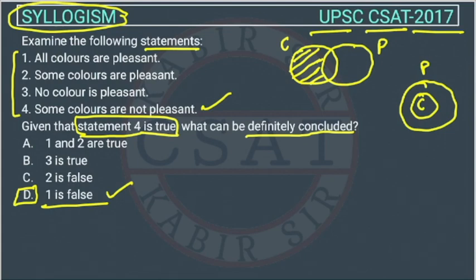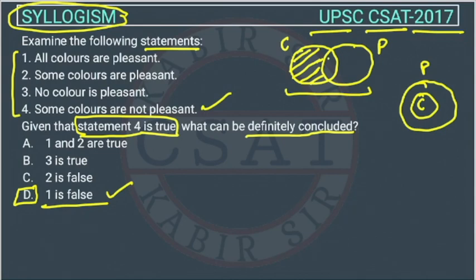Now we check statement two: some colors are pleasant. The question says some colors are not pleasant — that does not mean the vice versa is necessarily true. Now, statement three: no color is pleasant. From the Venn diagram, we cannot say that no color is pleasant, because there may be a dotted area in which some colors are present inside pleasant. So this case is also not possible.